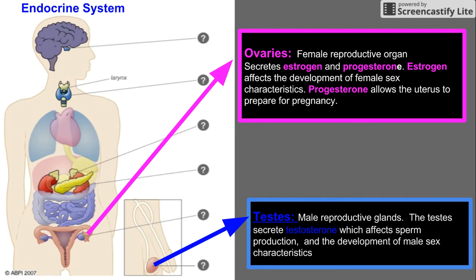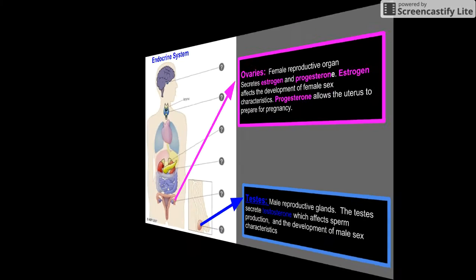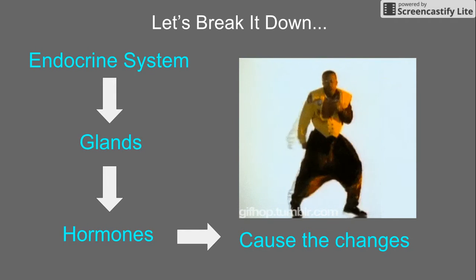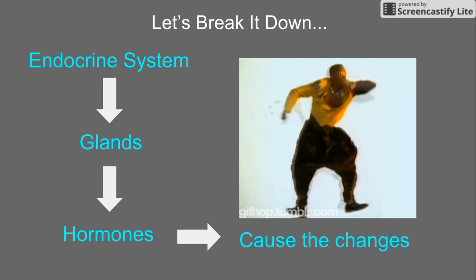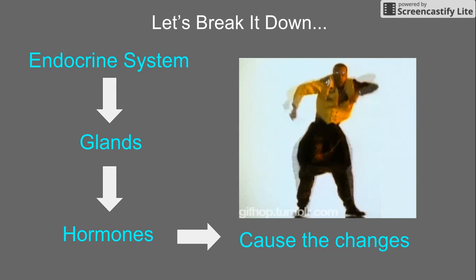In males, the testes are the male reproductive glands. The testes secrete testosterone, which affects sperm production and the development of male sex characteristics.